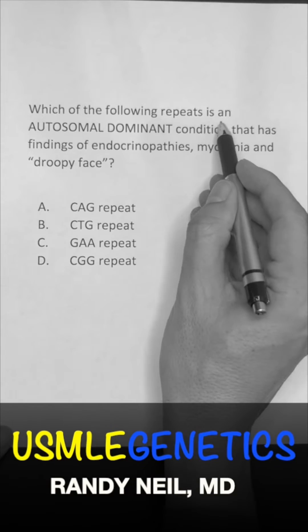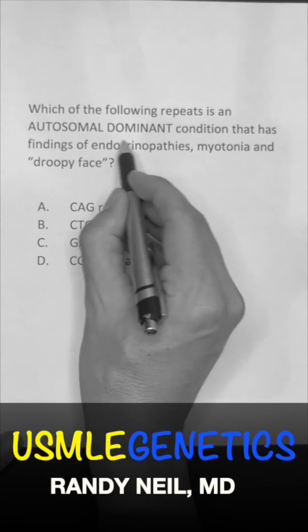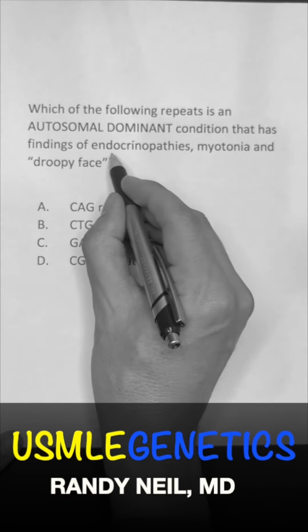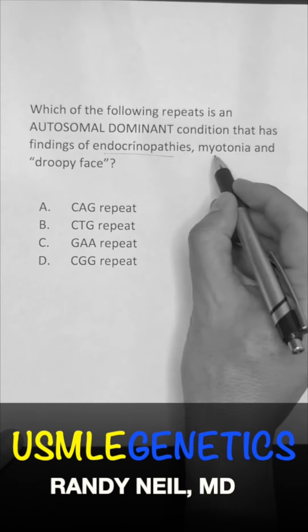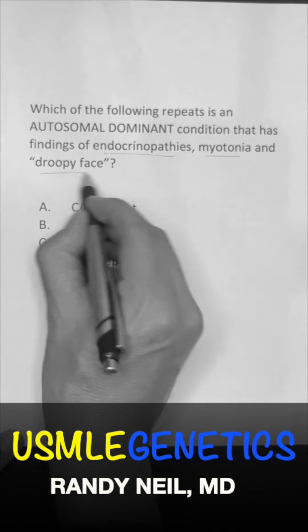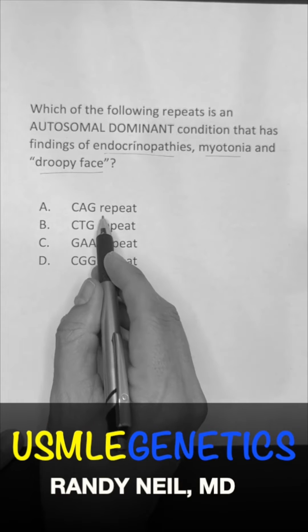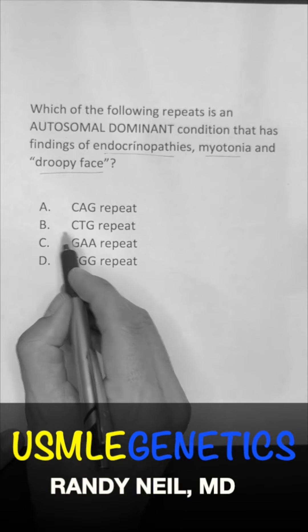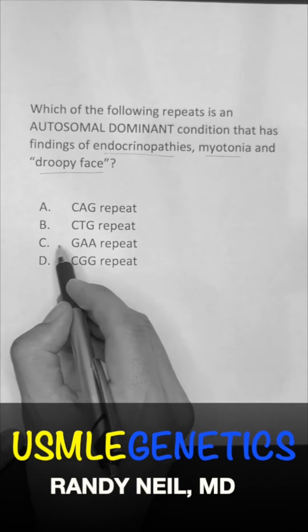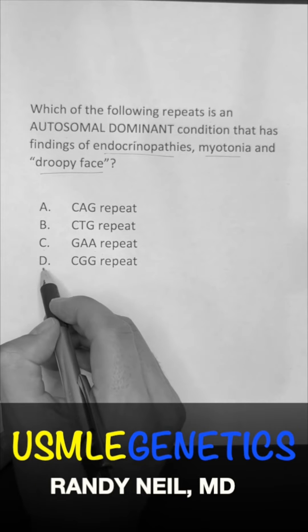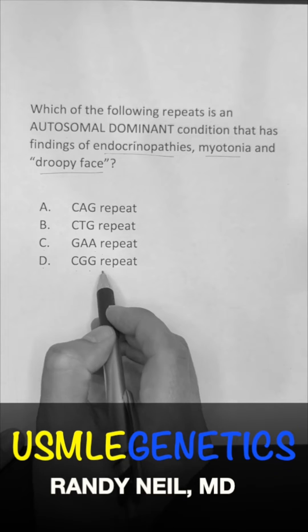Which of the following repeats is an autosomal dominant condition that has findings of endocrinopathies, myotonia, and a droopy face? Is it A, CAG repeat? Is it B, CTG repeats? Is it C, GAA? Or is it D, CGG?